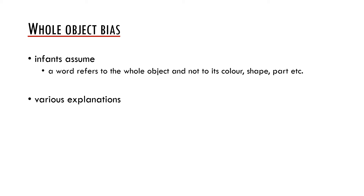In the literature, we may find different explanations of this principle. One of them is that we are predisposed to see the world as consisting of various objects, and that objects are thus the most salient entities to us.